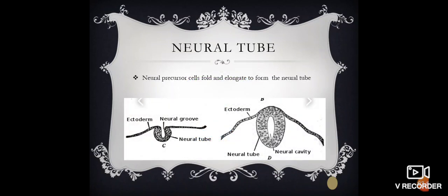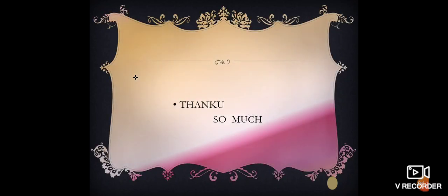Now, finally move toward neural tube. Neural precursors self fold and elongate to form neural tube. Neural tube also participates in the formation of brain and spinal cord. Here look to this diagram of neural tube. It is also a hollow-like structure. Thank you so much. I hope all are enjoyed.